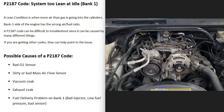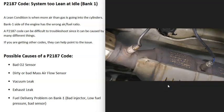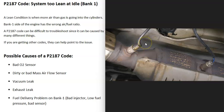One of the first things to do is find out if bank one is actually running lean, or if it's a bad O2 sensor reporting bad information to the computer. There are two sensors on each bank — sensor one before the catalytic converter, called the upstream O2 sensor, and sensor two after the catalytic converter, called the downstream O2 sensor. For this code, you'll usually want to test the bank one sensor one, or upstream O2 sensor. I've made videos on testing O2 sensors and will put a link below.